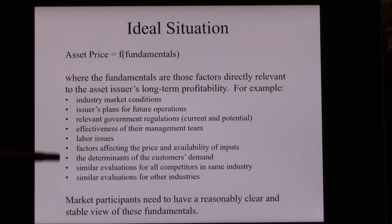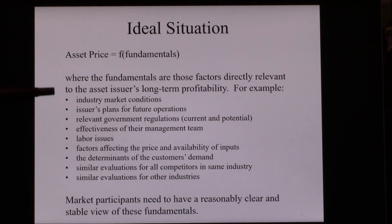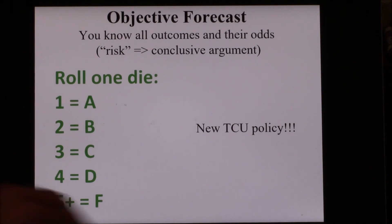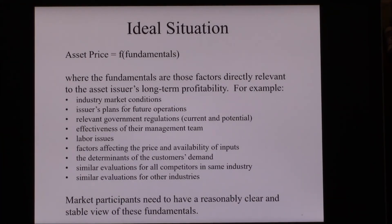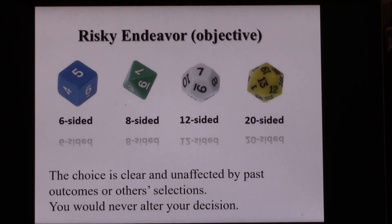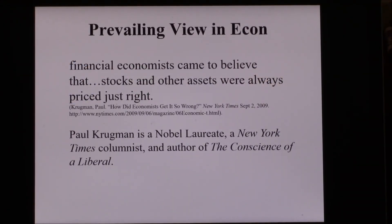If prices are derivative of those fundamentals, that's a good thing — asset prices will more accurately represent which undertakings are risky, which are safe, which are profitable. Market participants need to have a reasonably clear and stable view of these fundamentals. The problem is that financial institutions are subject to the same problem of uncertainty as the firms who are investing. We don't have all the information; we don't know all the odds. Economists and financial economists were building models based on risk rather than uncertainty, where it was assumed everything was known.